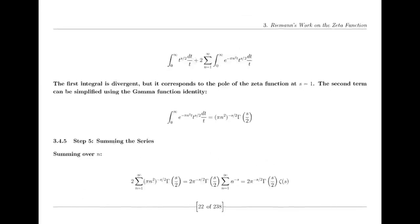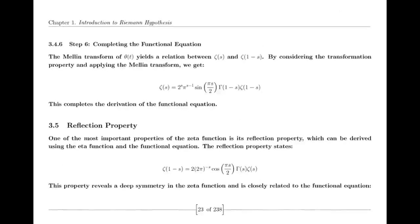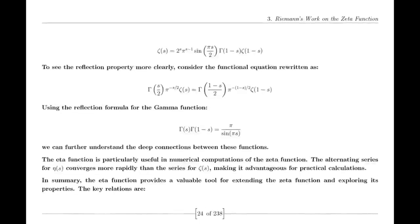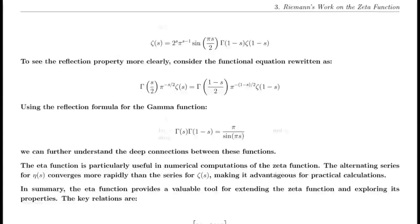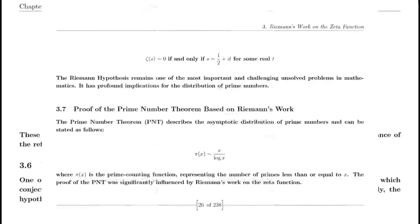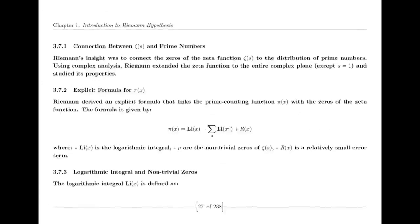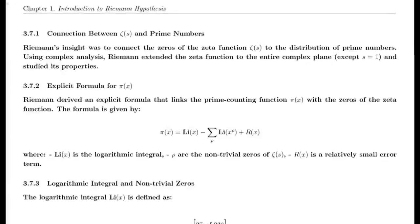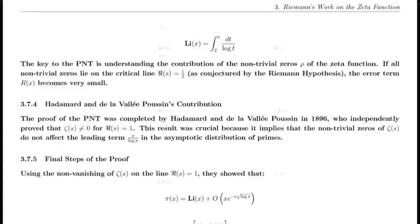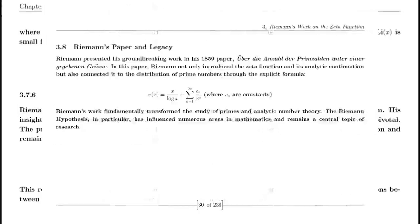These π/3 and π/6 angles are particularly noteworthy in the context of the Riemann hypothesis. According to the hypothesis, all non-trivial zeros of the zeta function lie on the critical line where the real part of s is one-half. If we project these angles onto the complex plane, the unit circle intersects the critical line at specific points corresponding to these π/3 or π/6 intervals. This alignment illustrates the relationship between geometric angles and the behavior of complex functions, serving as a bridge between the geometric unit circle and the analytical properties of the Riemann zeta function.